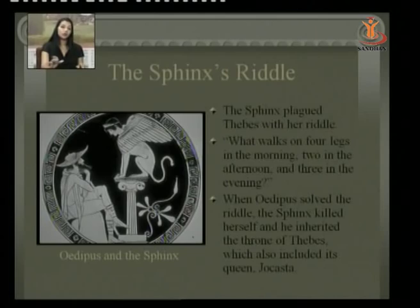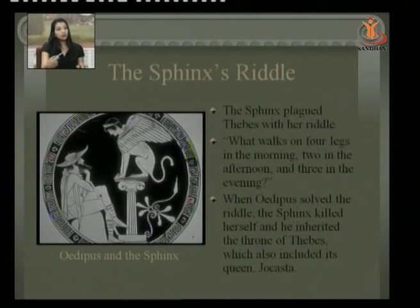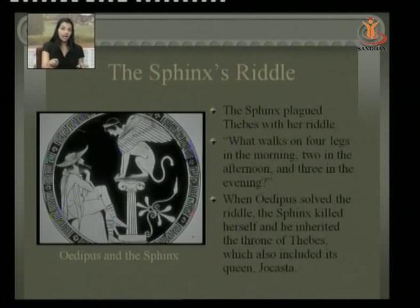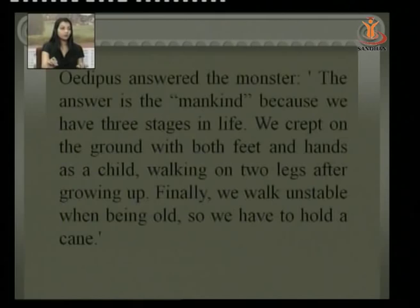The Sphinx plagued Thebes with a riddle that nobody could solve. The riddle was: what walks on four legs in the morning, two in the afternoon, and three in the evening? When Oedipus solved the riddle, the Sphinx killed herself, and he inherited the throne of Thebes, which also included Queen Jocasta.